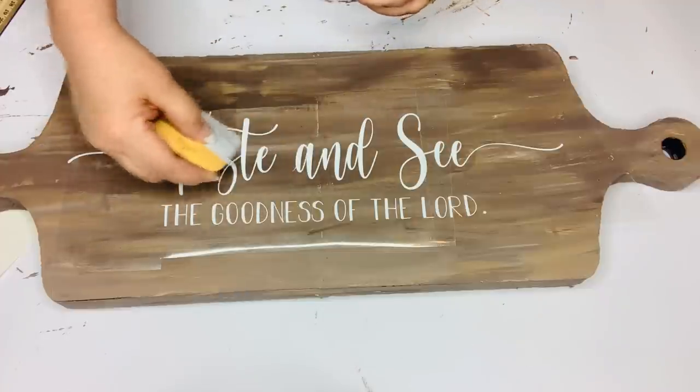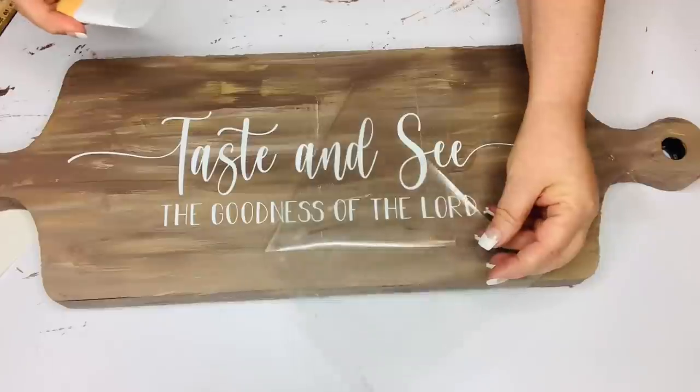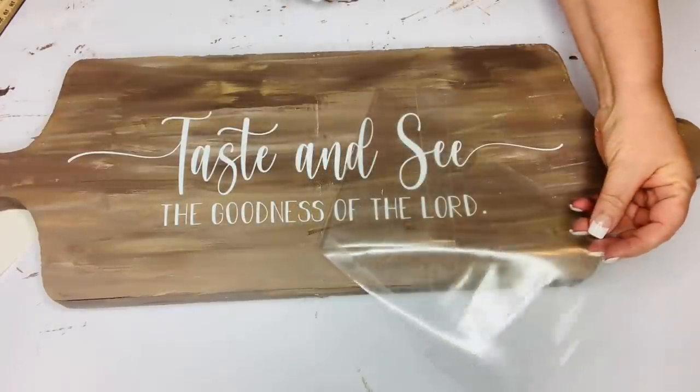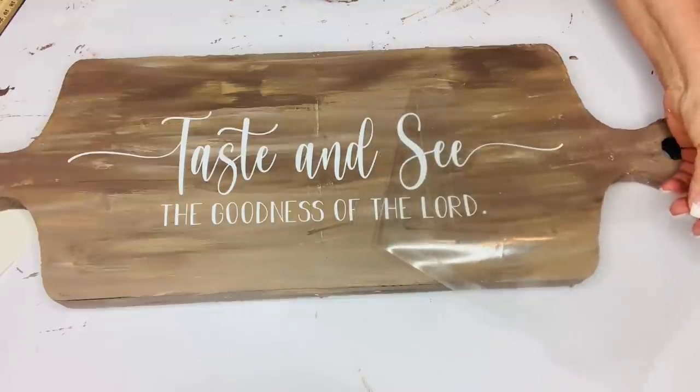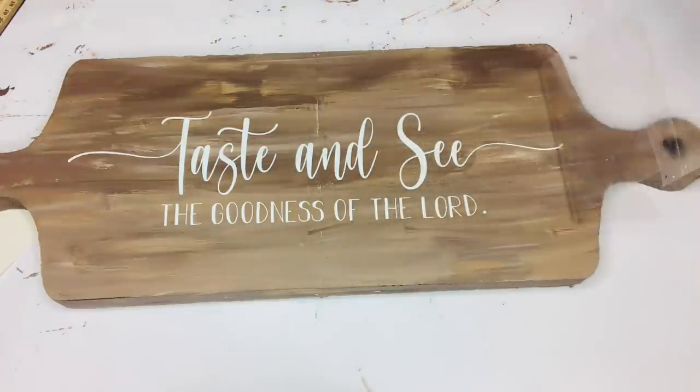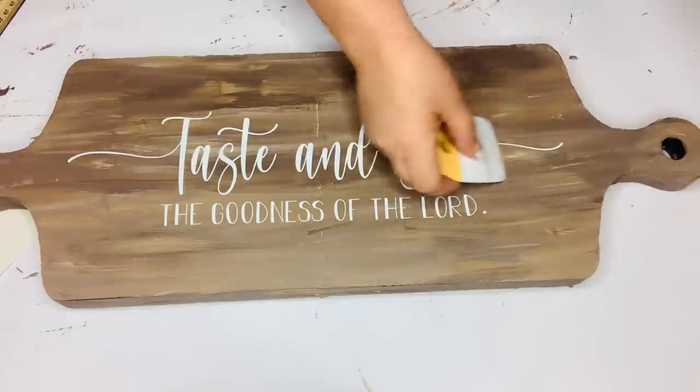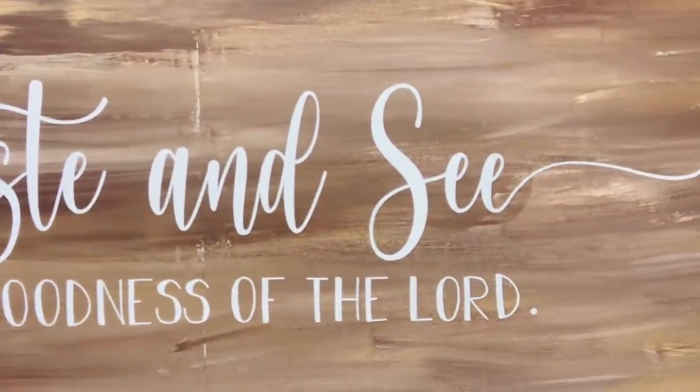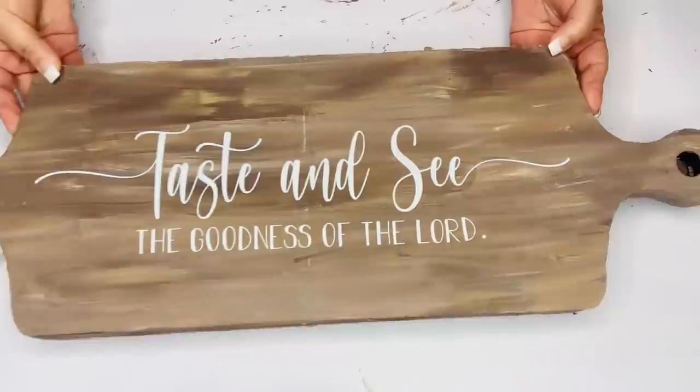So I'm just going to weed out my vinyl and then place my transfer tape on top of it. Pull the backing sheet off and then put it onto my cutting board. Press it down with a squeegee or a credit card or whatever and then just lift my transfer tape up. And it doesn't bring the paint up or anything as long as you let it dry. I only let it dry about an hour or so. So it stayed on really well as long as you pull it kind of slowly.